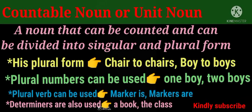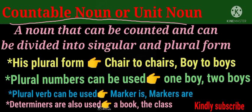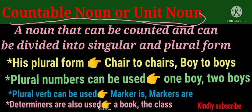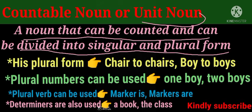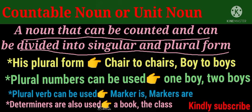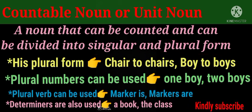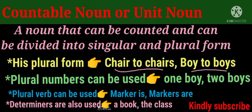Countable nouns are unit nouns — a noun that can be counted and can be divided into singular and plural forms. For example: chair, chairs; boy, boys.